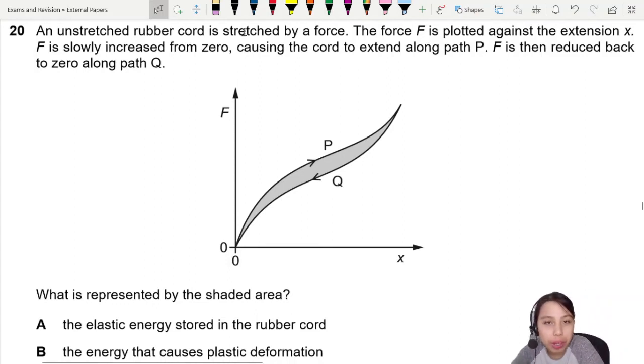Here's an unstretched rubber cord that is stretched by a force. They plot the graph of force against extension of this rubber cord that you're pulling apart. The force is slowly increased from zero and you follow this upper path, causing it to extend. But then when you let go and reduce the force, notice there's a different path on the graph - it goes the bottom path.